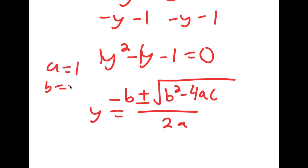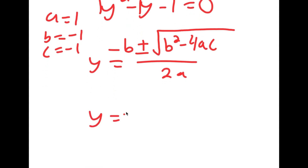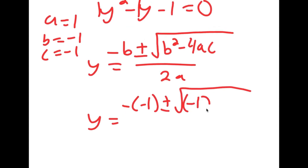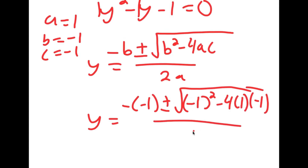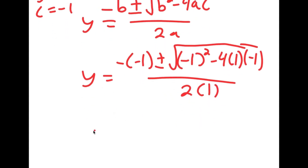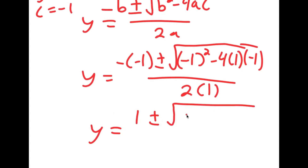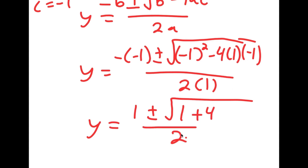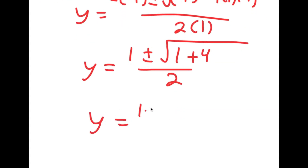To solve this, I'm going to use the quadratic formula, which is negative b plus or minus the square root of b squared minus 4ac, all over 2a. In this case, a is 1, b is negative 1, and c is negative 1. So I get y is equal to negative of negative 1 plus or minus the square root of negative 1 squared minus 4 times 1 times negative 1, all over 2 times 1. This equals 1 plus or minus the square root of 1 plus 4, all over 2, which equals 1 plus or minus the square root of 5 over 2.